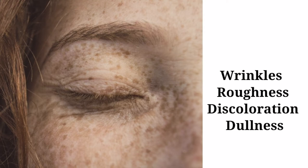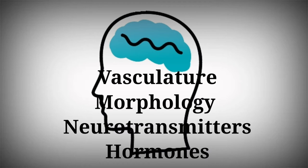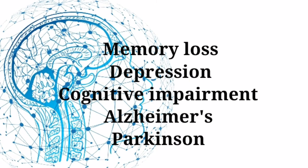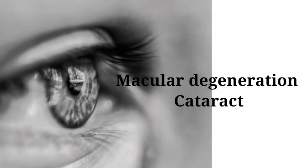Oxidative stress accelerates brain aging, leading to altered brain vasculature morphology and altered levels of neurotransmitters and hormones. From milder effects like memory loss, depression, and cognitive impairment, if left unchecked it can progress to Alzheimer's disease and Parkinson's disease. It can also lead to asthma and chronic obstructive pulmonary disease.